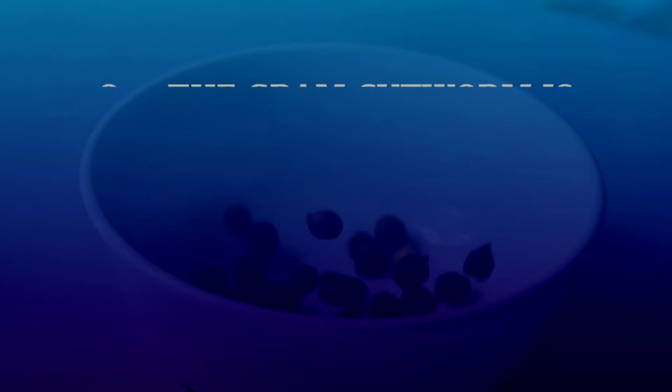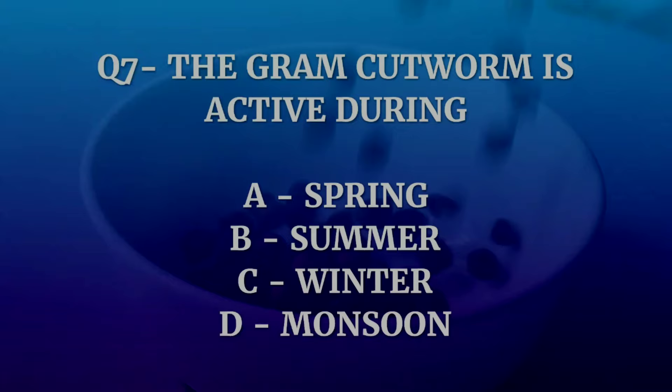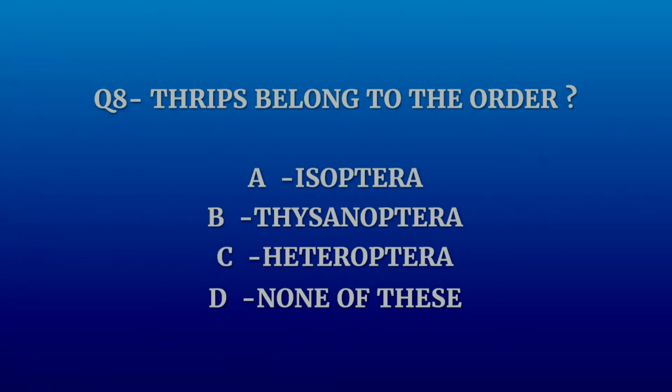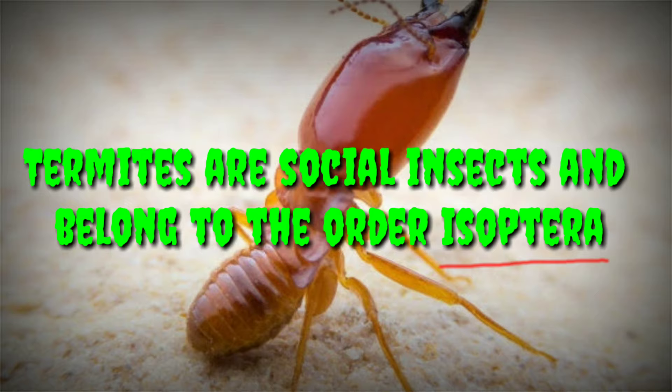Question number seven: the gram cutworm is active during which period? Options are spring, summer, winter, or monsoon. The correct answer is winter. Question number eight: thrips belong to which order? The options are Isoptera, Thysanoptera, Heteroptera, or none of these. The answer is Thysanoptera.